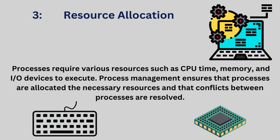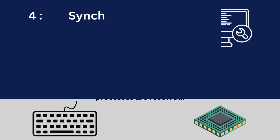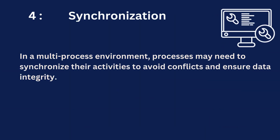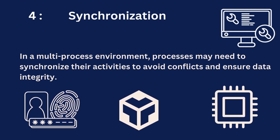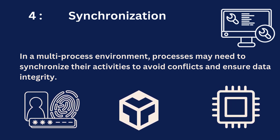Four: synchronization. In a multi-process environment, processes may need to synchronize their activities to avoid conflicts and ensure data integrity. Process management provides mechanisms such as locks, semaphores, and barriers to coordinate access to shared resources and communication between processes.